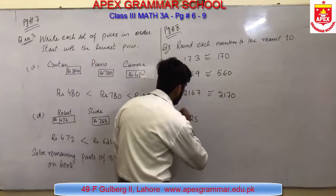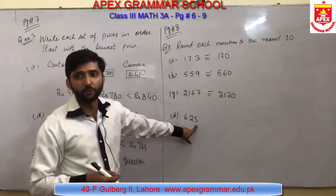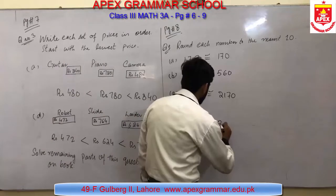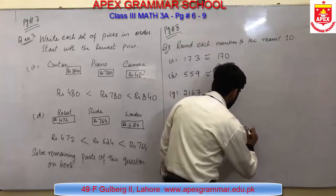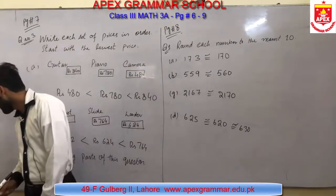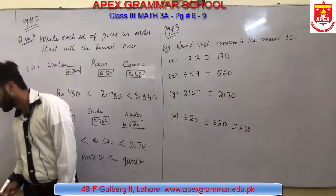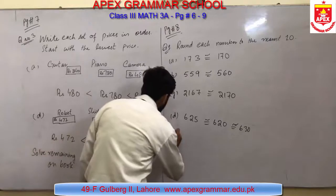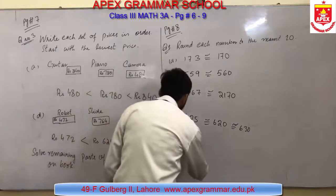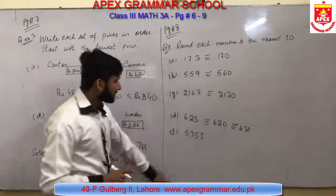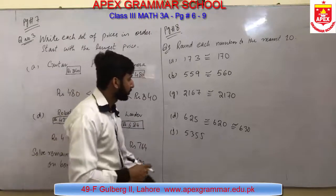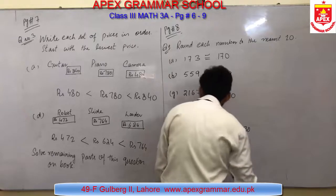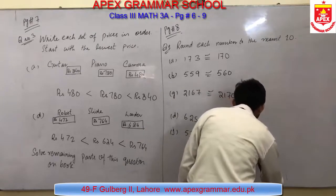Part D is 625. The last digit equals 5, so as I told you, it is your own choice — either go forward or come backward. Both are acceptable. 625 equals 620 or 630. Part J is 5355. The last digit is also 5, so again it is your own choice. This number becomes 5350 or 5360; both are acceptable.